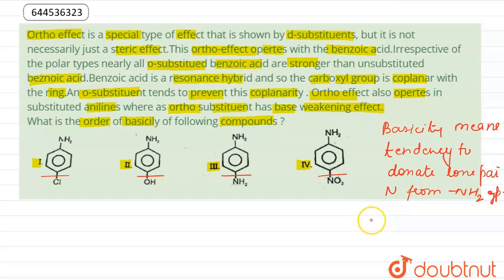If any group attached to aniline increases the electron density around nitrogen of NH2 group, then it will increase the basic character and vice versa. Let us check effect of all these groups. Cl has minus I effect as well as plus R effect, but here minus I effect is dominating factor.